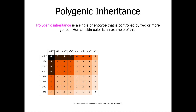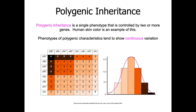Polygenic inheritance is a single phenotype that is controlled by two or more genes. Human skin colour is an example of this. The phenotypes of polygenic characteristics tend to show continuous variation. The image is essentially a model showing the inheritance of three genes on the left-hand side. In reality, human skin colour is controlled by many more than three genes. But as a result of this, on the right-hand side, you can see the continuous variation in skin colour modelled on the graph.